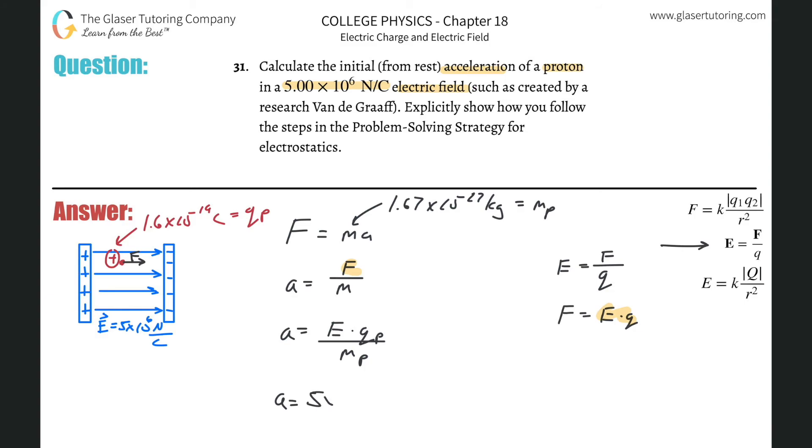So E is going to be now 5 times 10 to the 6th multiplied by Q sub P and what's Q, right? We said that's going to be 1.6 times 10 to the minus 19th. And then divide that now all by the mass, which is about 1.67 times 10 to the minus 27 kilograms. Let's see what we get. So 5 times 10 to the 6th times 1.6 times 10 to the minus 19th divided by 1.67 times 10 to the minus 27, 4.79 times 10 to the positive 14th. And that's in meters per second squared. There's your acceleration. Very large acceleration.